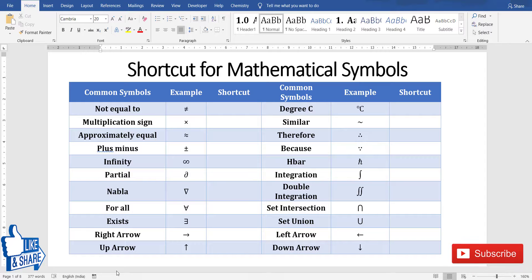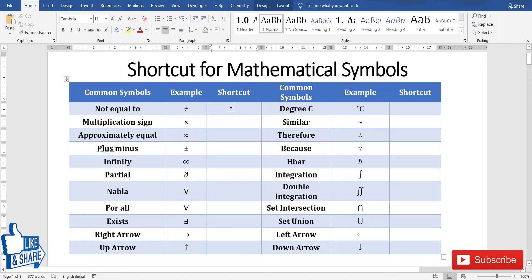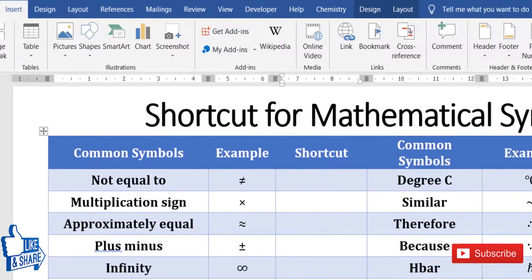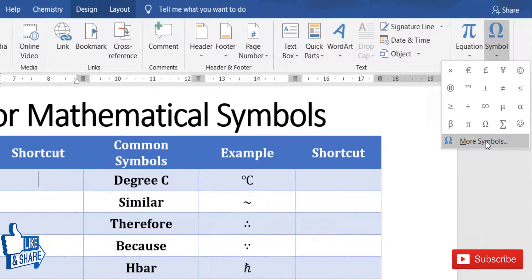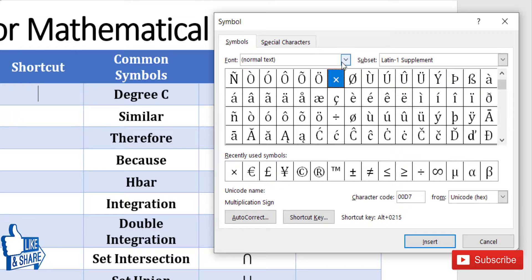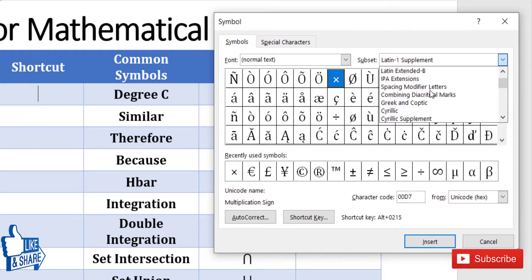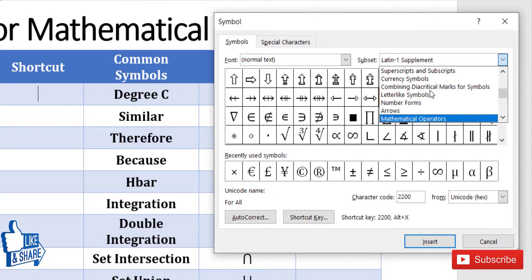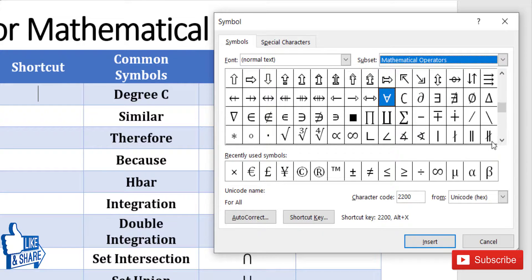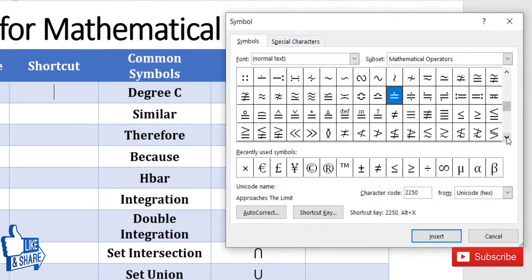For example, let's say if you want to type the mathematical symbol for not equal, the common method would be to go to the Insert tab, then click on Symbols, and search for the not equal to symbol in this complete list. To get mathematical symbols, I need to go to the mathematical operators, then search for the not equal to symbol and insert it. This task is very time-consuming.